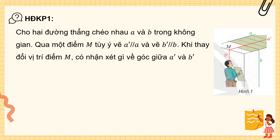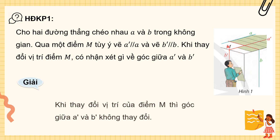Nhìn hình vẽ rất rõ ràng, điểm M đang ở vị trí này. Nếu cô thay đổi vị trí điểm M, thì chúng ta có nhận xét gì về góc giữa đường thẳng A' và B'? Thực ra điểm M đang chạy di chuyển trên cạnh này. Nếu M có thay đổi, thì góc giữa đường thẳng A' và đường thẳng B' sẽ không thay đổi.